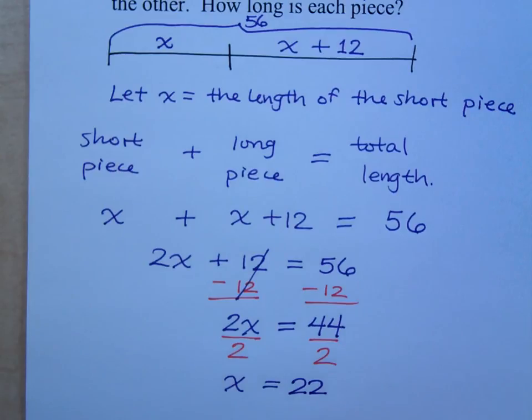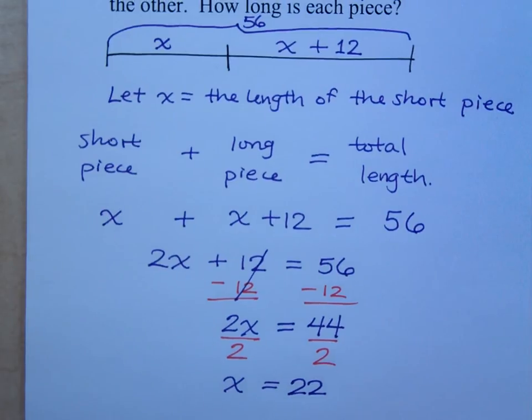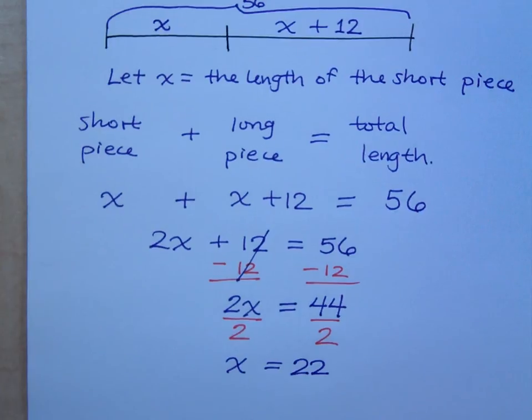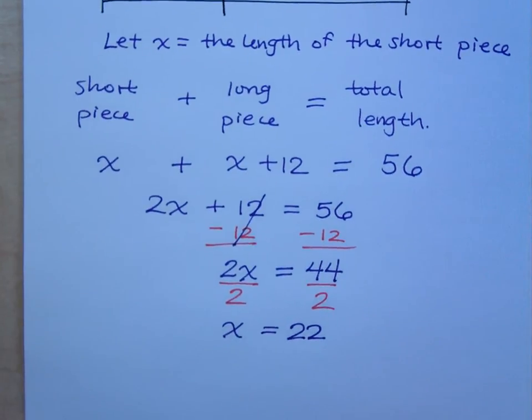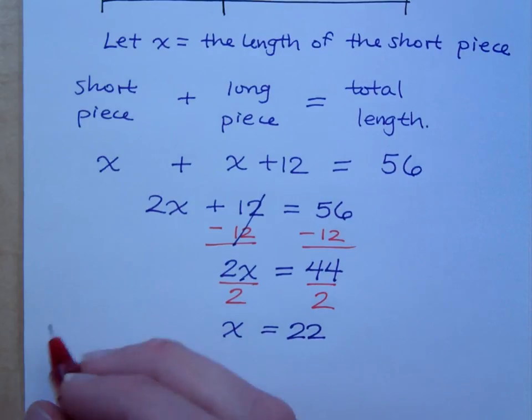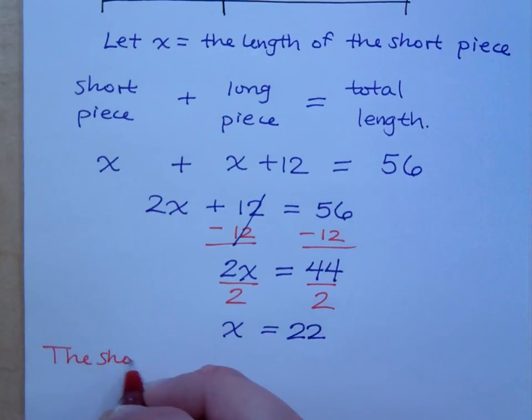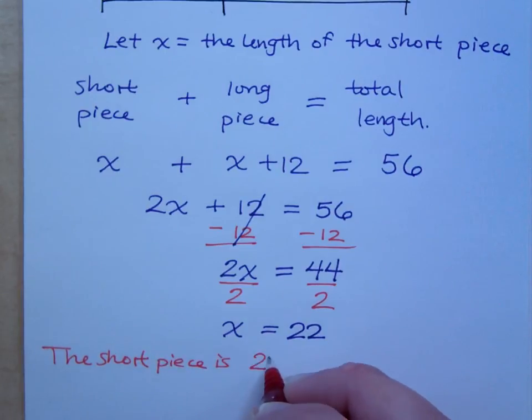But what did x represent in this problem? It was what? No, it wasn't length of the board. It was length of the short piece. So, how long is the short piece? Seriously, how long is the short piece? That's what we said x was representing. The length of the short piece. So, that means that the short piece is 22 inches.